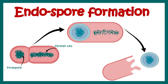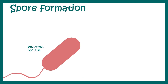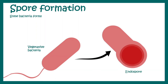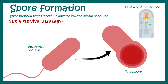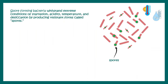In this video we'll talk about endospore formation. Many gram-positive bacteria can form endospores. Vegetative bacteria undergo spore formation under extreme or adverse environmental conditions. This is like a survival strategy — the spore is just like a hibernation pod; the bacteria can go into a hibernation mode, and whenever the environmental situation is favorable, it would germinate back again.